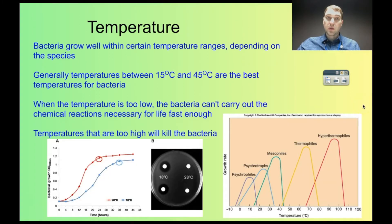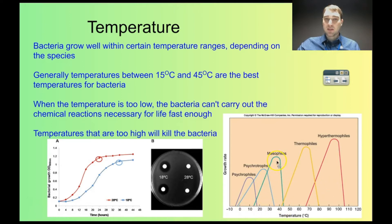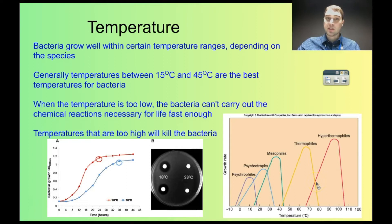Bacteria grow well within certain temperature ranges, and that depends on the species. Generally speaking, most will grow okay between 15 and 45 degrees. If we have a look at this graph over here, we can see 15 to 45 — these are the mesophiles. Meso means middle, so these are the bacteria that like middling temperatures. There are some bacteria that can survive at low temperatures, and some that do really well at high temperatures — it depends on the species.